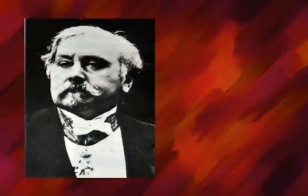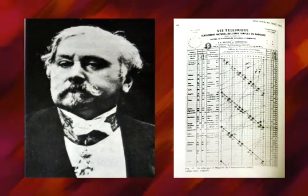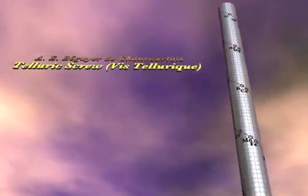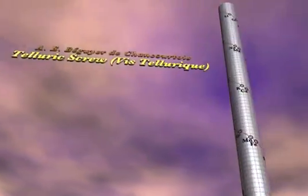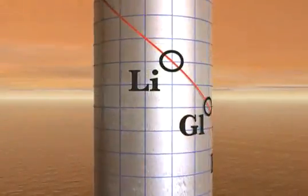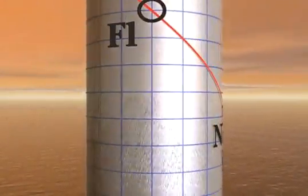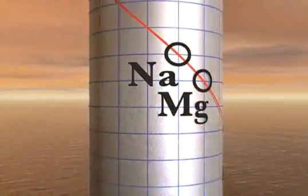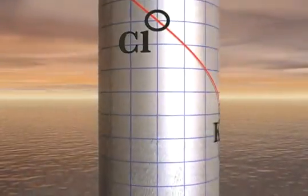Alexandre Emile de Chancatois, in 1862, was the first to recognize the periodicity of the elements — that as one goes from element to element in order of increasing atomic weight, the properties of the elements seemed to repeat periodically. He created a three-dimensional helical system to show this pattern. But since he was a geologist and his diagram wasn't published with the article, he was largely ignored.